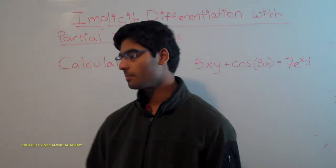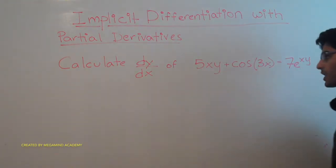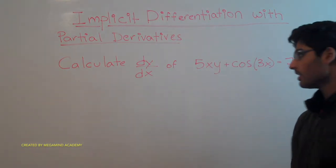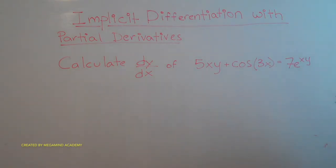Hi! Today we're going to learn about how to do implicit differentiation with partial derivatives. Let's say we have a problem like this. Calculate dy/dx of 5xy plus cosine of 3x equals 7e to the xy power.